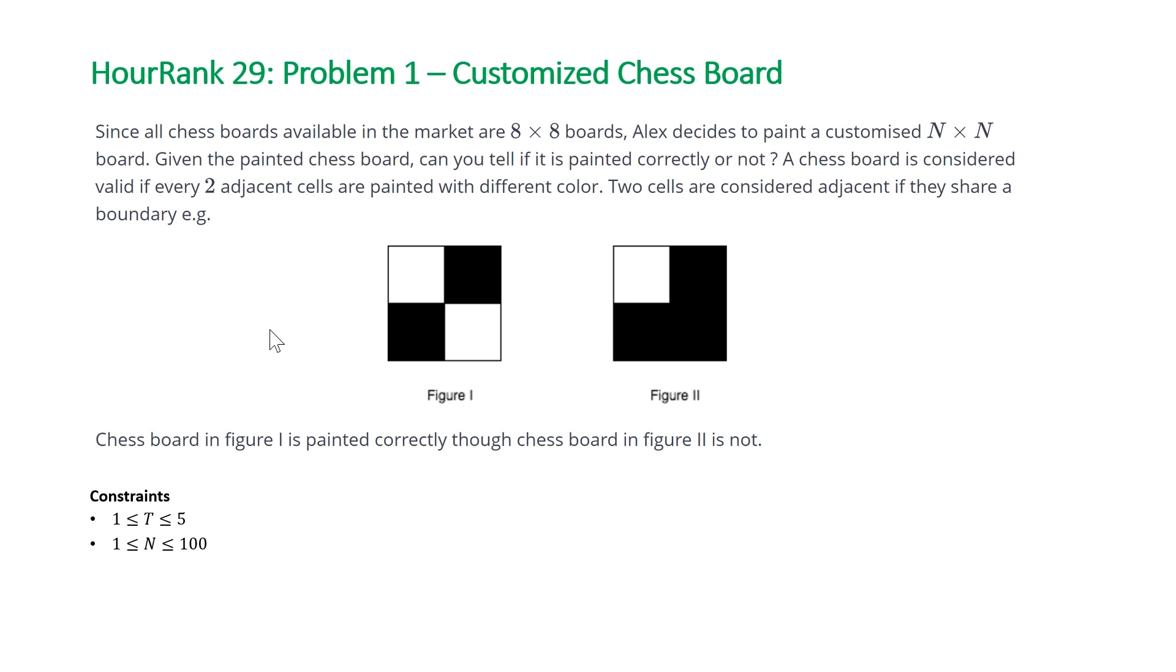And if you get through both of these nested for loops and you haven't seen any elements that are equal to each other that are adjacent, then you can return yes. So let's take a look at the code for this solution.